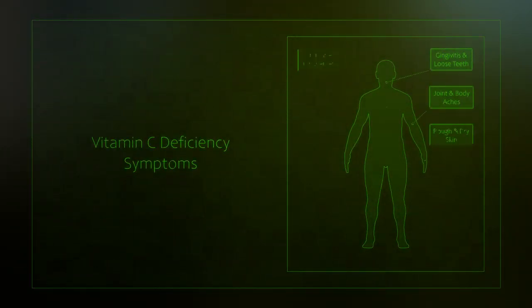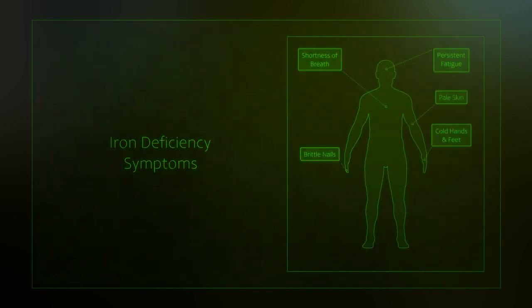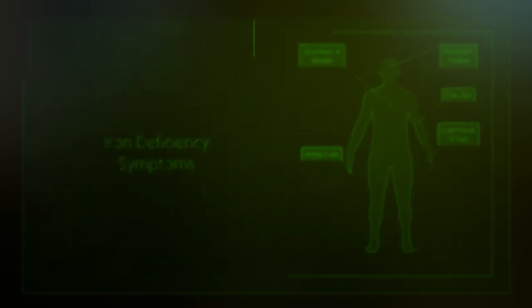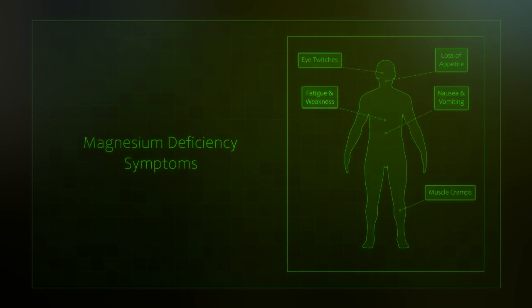A severe deficiency of vitamin C is called scurvy. An extreme deficiency of iron is what doctors call anemia. A deficiency of magnesium is called hypomagnesemia.